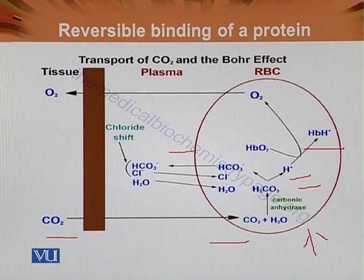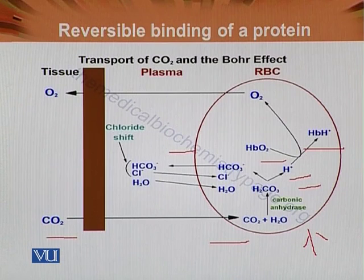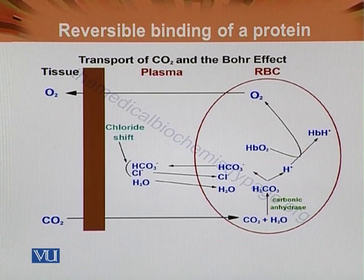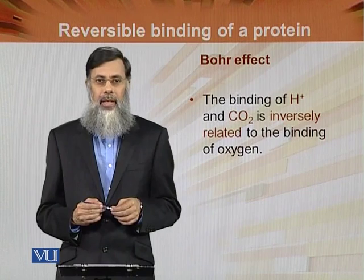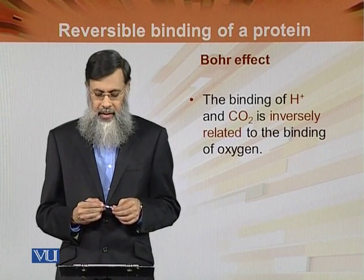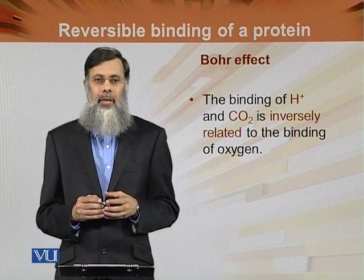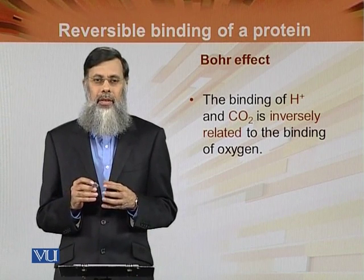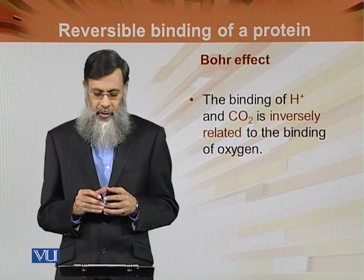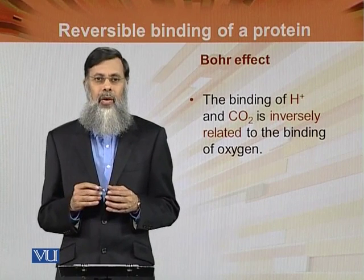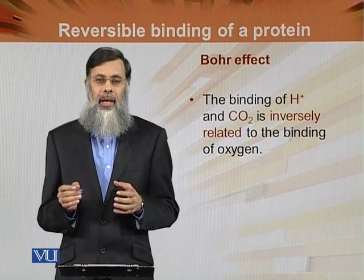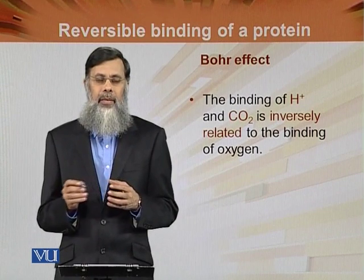When hemoglobin takes up hydrogen ions, it must dissociate something else in return — so oxygen dissociates and hydrogen attaches to hemoglobin. This is known as the Bohr effect and the transport of carbon dioxide. The binding of hydrogen and CO₂ is inversely related to the binding of oxygen.